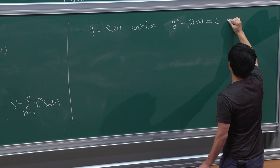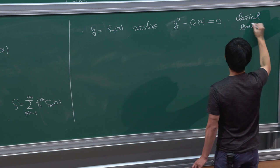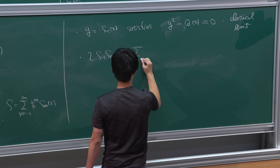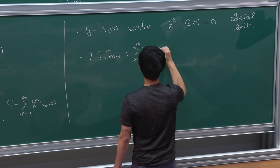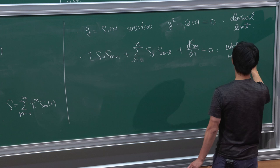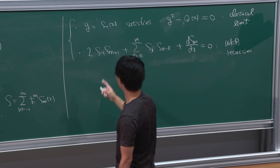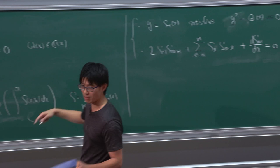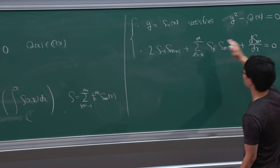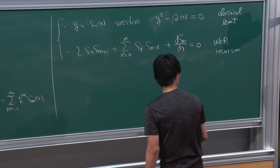The equation y^2 = Q(x) is nothing but the classical limit of our Schrödinger equation. Higher-order coefficients are recursively determined. I'm writing this formula to show you some similarity between WKB recursion and topological recursion. The primitive of S — denoted as a one-form — is related to omega_{0,1} in topological recursion, and the higher-order coefficients are similarly defined.